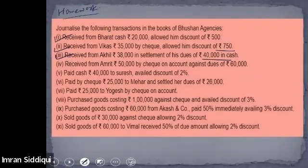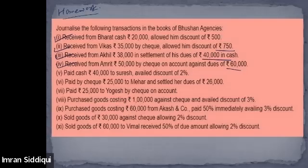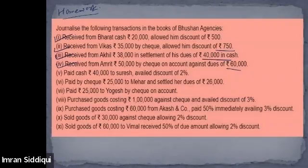Fourth transaction: receive from Amrit 50,000 by cheque on account against dues of rupees 60,000. Bank account debit to Amrit account — the amount is 50,000, because the cheque is for 50,000. That is correct.